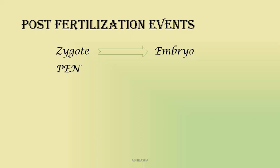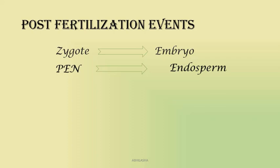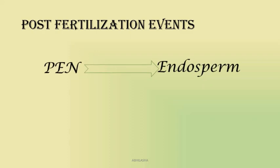Which of these will occur first? Here's a simple example: if your school gets over at 2 pm, does your mum wait for you to reach home and then start making lunch? Of course she is ready with lunch by the time you reach home. Using this logic, endosperm development precedes embryo development.